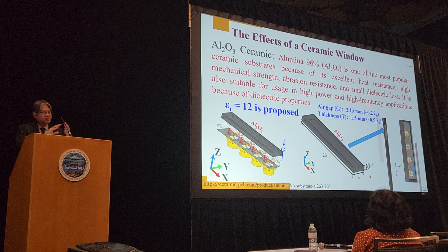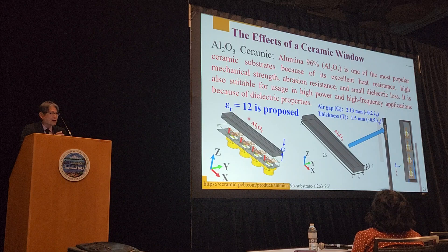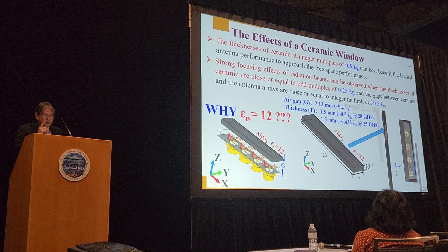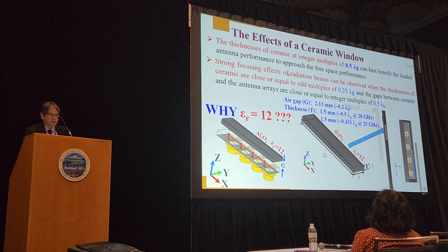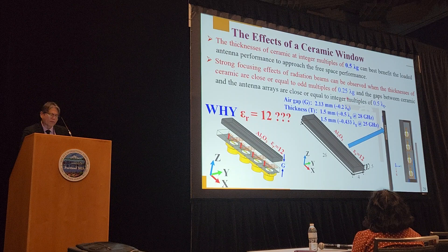We stick this ceramic on top of our antenna, with an air gap of 2.13 mm and a thickness of 1.5 mm. We chose epsilon r of 12 because, remembering Dr. Huang's statement, the thickness of the ceramic must be an integer multiple of 0.5 lambda g. The air gap is 2.13 mm, approximately 0.2 lambda 0. At 28 GHz, the thickness of 1.5 mm is exactly 0.5 lambda g.